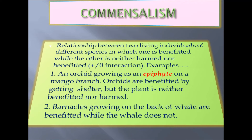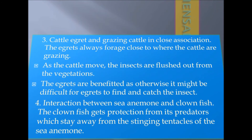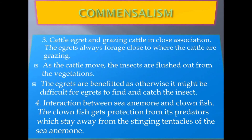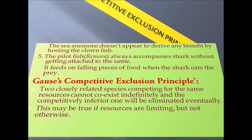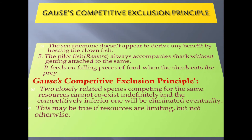Second example: barnacles growing on the back of a whale are benefited while the whale is unaffected. Next example: cattle egrets and grazing cattle in close association. The egrets always forage close to where the cattle are grazing; as cattle move, insects are flushed out from vegetation, benefiting the egrets. Also, the clown fish gets protection from its predators by staying near the stinging tentacles of the sea anemone. Another example: the pilot fish or remora always accompanies a shark and feeds on falling pieces of food when the shark eats its prey.